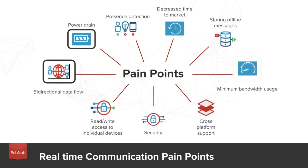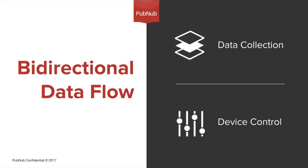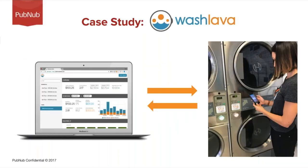We also have power drain and bandwidth considerations, because most of these devices have power constraints, are pretty low on memory, and can't be online all the time. This affects your decision while choosing a communication protocol — you want something that reduces the chattiness to keep power drain to a minimum, while also taking into consideration the bandwidth requirements of that device. The next pain point is bidirectional data flow. It's no longer just about collecting data from devices — we want to be able to send and receive data between all of them at the same time, monitoring and controlling devices with data flowing from devices to dashboards to the back end.